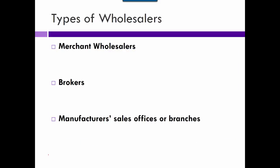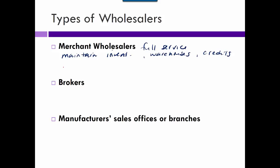The three different types of wholesalers: a merchant wholesaler is a full-service wholesaler — they operate warehouses, maintain inventory, and probably supply credit to their buyers, who are retailers. There are also limited-service ones that don't do quite as much. A broker doesn't take ownership — they just get the buyer and seller together, kind of like a real estate agent. They don't purchase it; they just negotiate the sale between the buyer and the seller.